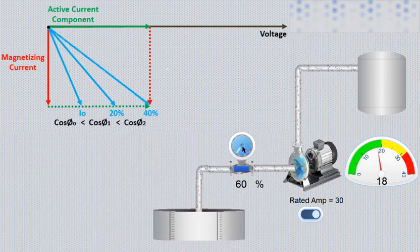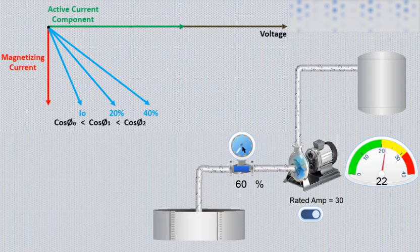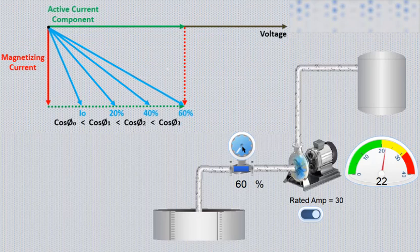At 60 percent of load again magnitude of only active component is increased, which reduces angle between voltage and resultant current, tending better power factor.